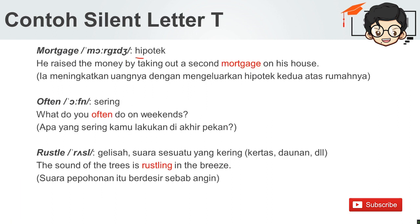Kemudian selanjutnya, 'mortgage' — hipotek. Di sini T berada di akhir silabel pertama dan di awal silabel kedua ada huruf G — tidak perlu baca T-nya. He raised the money by taking out a second mortgage on his house. Ia meningkatkan uangnya dengan mengeluarkan hipotek kedua atas rumahnya. Selanjutnya, 'often' — T setelah huruf F — sering. What do you often do on weekends? Apa yang sering kamu lakukan di akhir pekan?